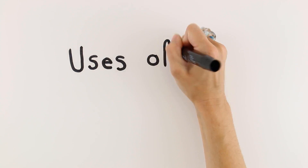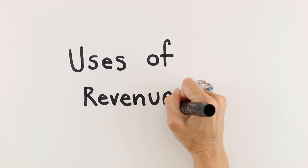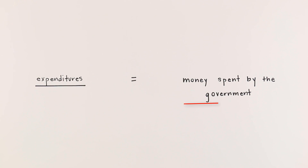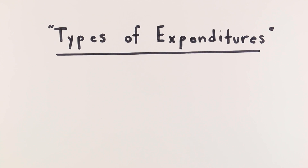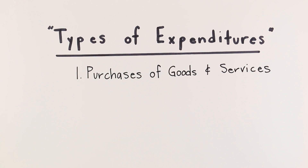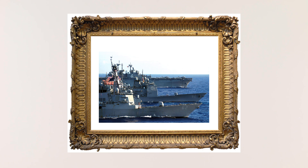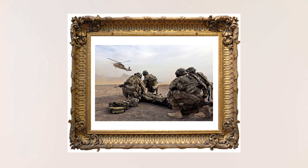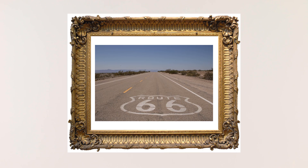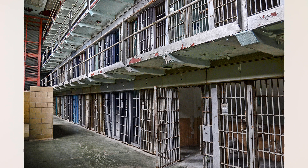When the government spends tax dollars, we call these expenditures. There are two main categories of government expenditures. The first is the purchase of goods and services, which includes things like defense or the military, highways, jails, and so on.